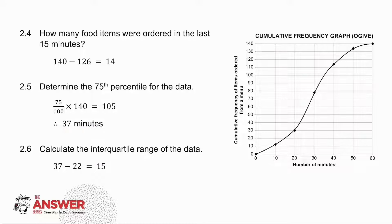2.6 asks for the interquartile range. Now remember, the interquartile range is the upper quartile minus the lower quartile. The upper quartile is, in fact, the same as the 75th percentile, because the upper quartile, quartiles divided into quarters, so into 25%. So your upper quartile I have already. My lower quartile, I take 25% of 140, and I get 35. If I go across from there, I get approximately 22, so my interquartile range is 15.